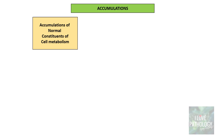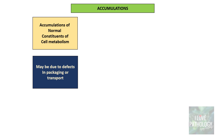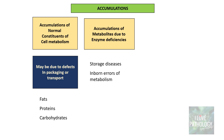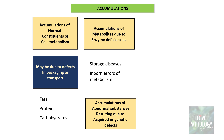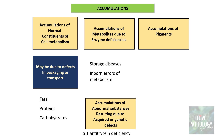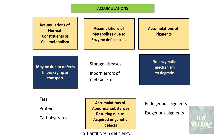What are these accumulations? Accumulations in the cell can be of normal constituents of cell metabolism, which may be due to defects in packaging or transport — such as accumulation of fat, proteins, and carbohydrates. Accumulations can also be of metabolites due to enzyme deficiencies, involving storage disorders and inborn errors of metabolism. They can also result from acquired or genetic defects — a common example being alpha-1 antitrypsin deficiency. Finally, accumulations can be of pigments, either endogenous or exogenous, where there is no enzymatic mechanism to degrade them.